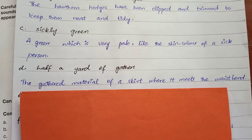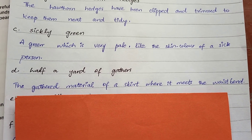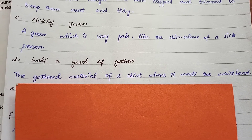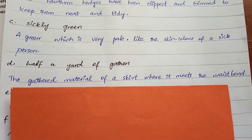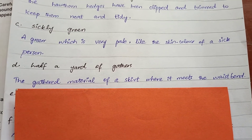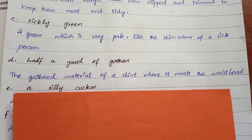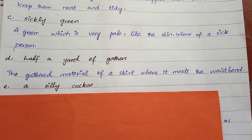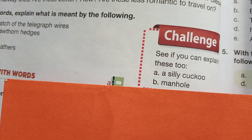The fourth phrase is 'half a yard of gathers': the gathered material of a skirt where it meets the waistband. Waist کے نزدیک skirt کی چونٹوں والا حصہ جہاں پر کافی material اکٹھا ہوا ہوتا ہے۔